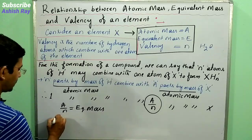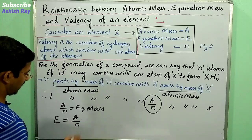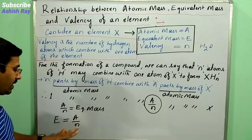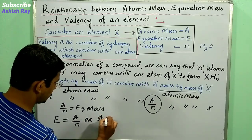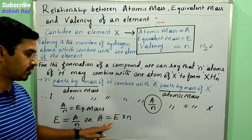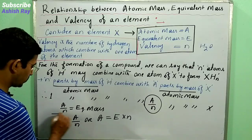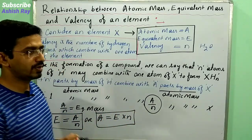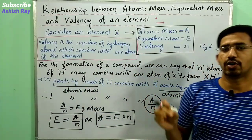So we can say E equals A divided by N, where E is the equivalent mass, A is the atomic mass, and N is the valency. Or equivalently, A equals E multiplied by N. Using these two relations — E = A/N or A = E × N — we can determine the atomic mass, equivalent mass, or valency.